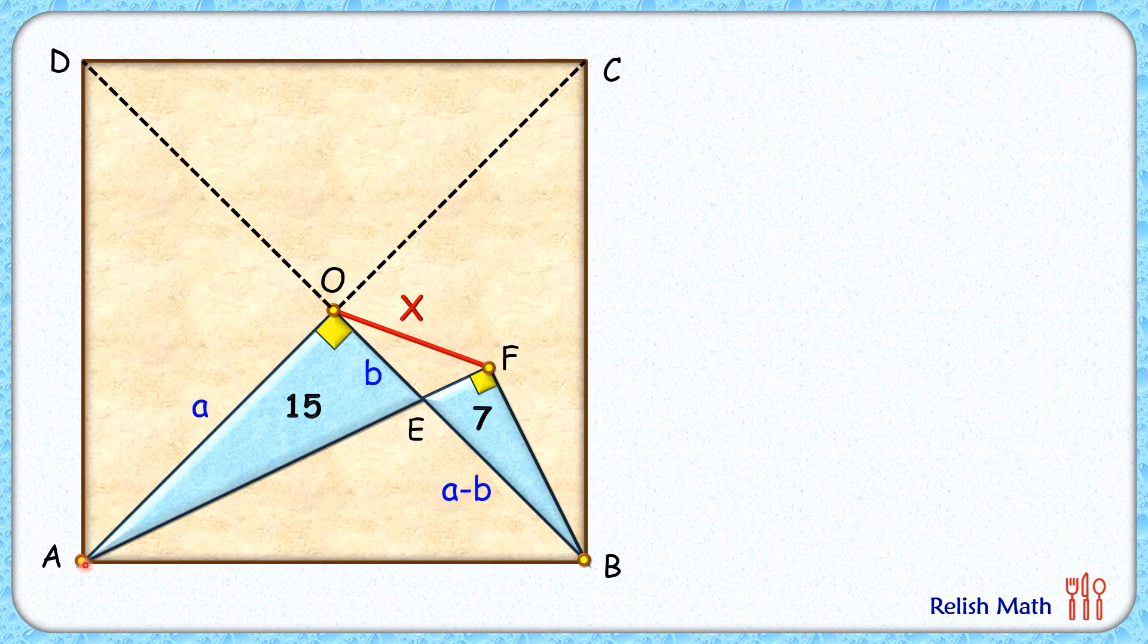By Pythagoras theorem, we can find AB length as root 2 times a. Now if we compare the area of triangle AOE, we'll get half times base into height as 15, so half of a times b is 15, or a times b is 30.